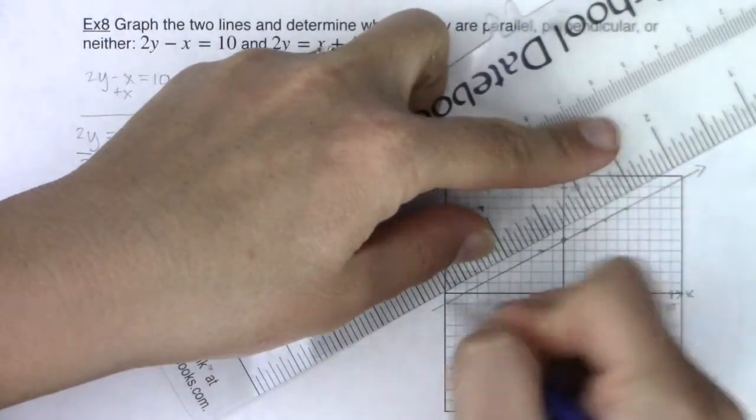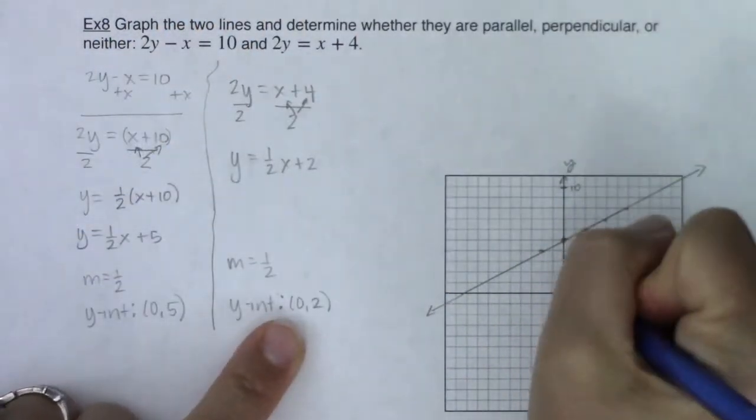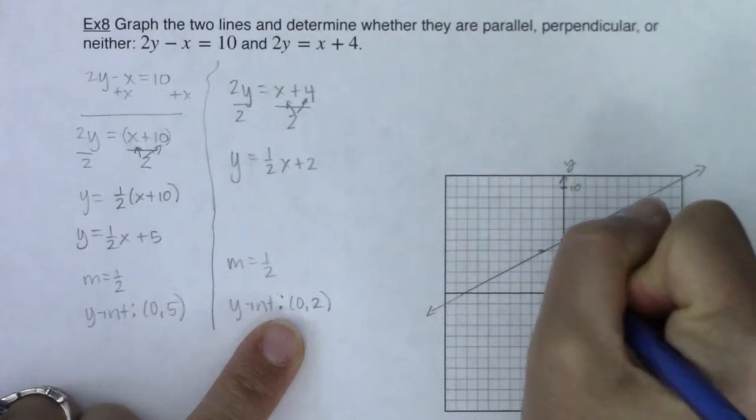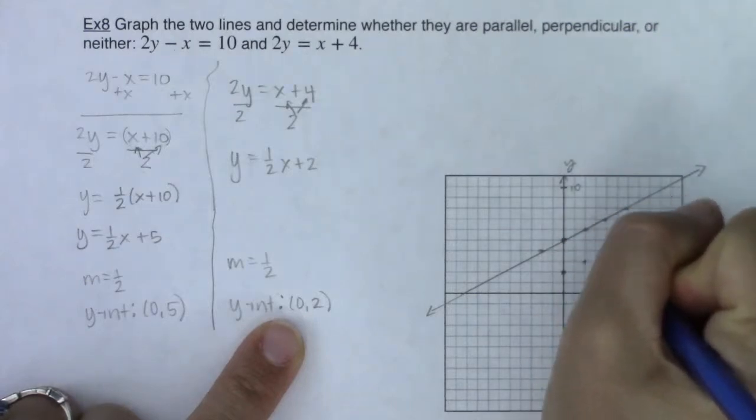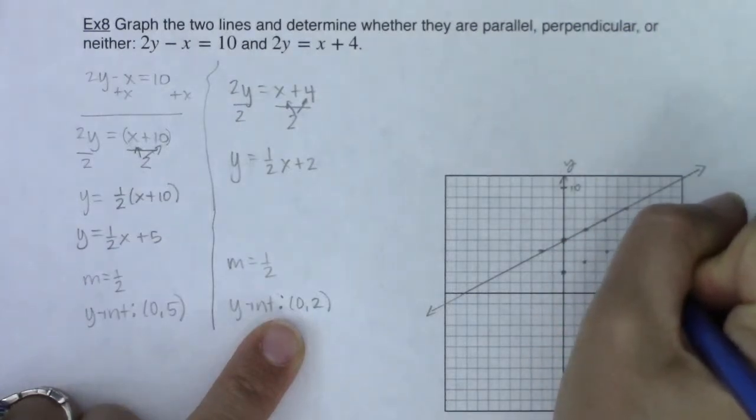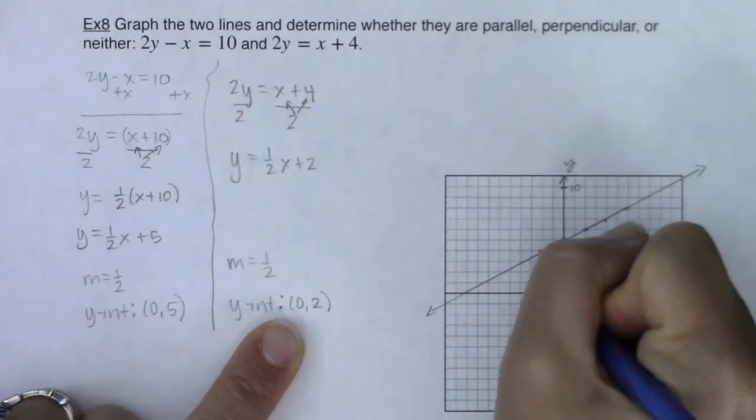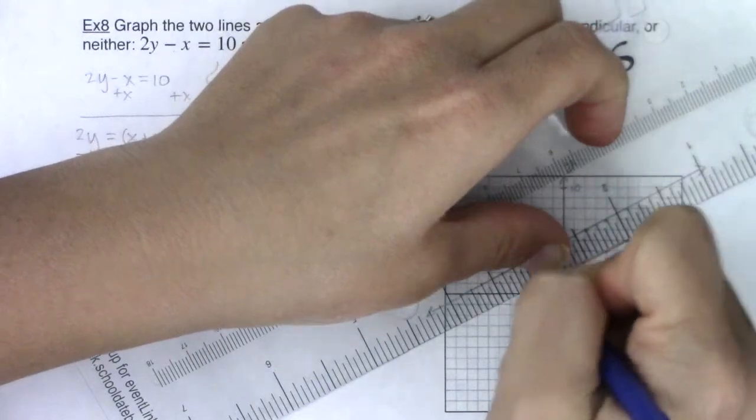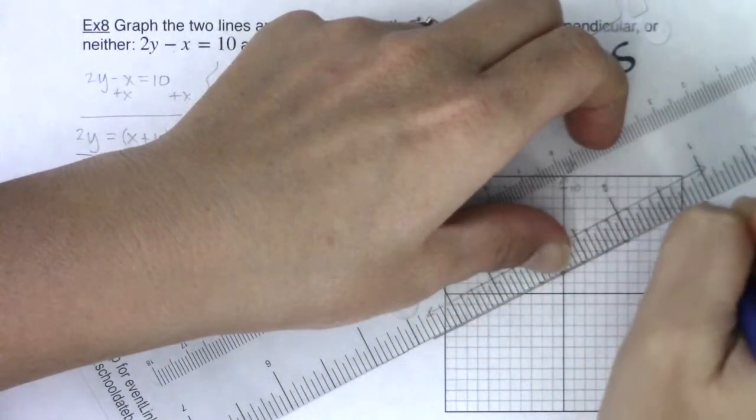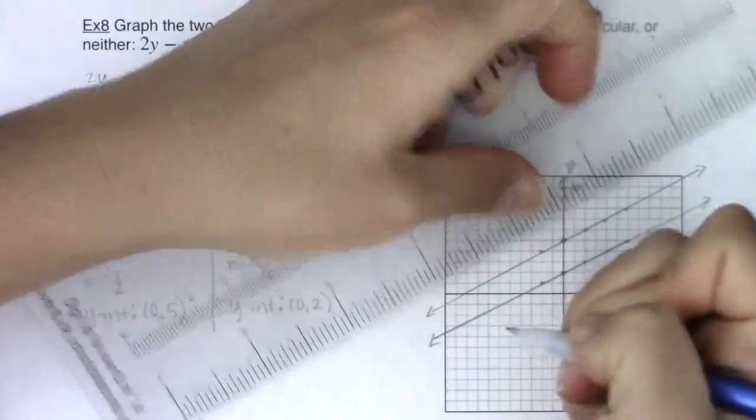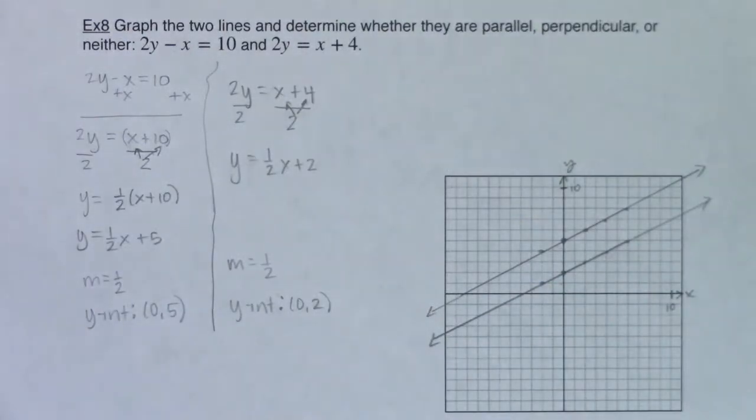All right, now this line starts at 0, 2. But its slope is also 1 half. So up 1, right 2. Up 1, right 2. Up 1, right 2. Or if I wanted, down 1, left 2. All right. Yeah, that looks pretty parallel, right? They're not touching. Okay.